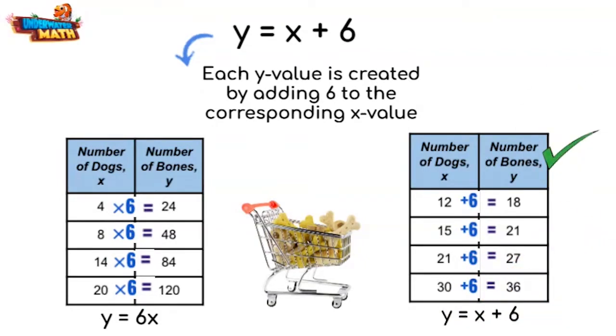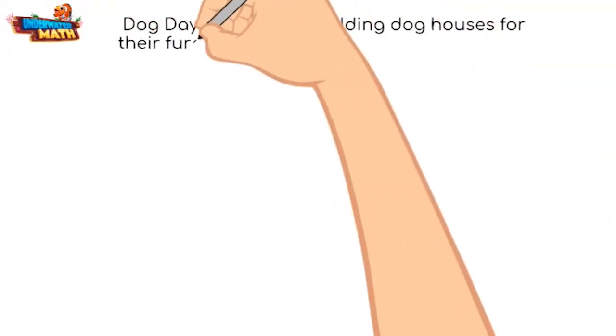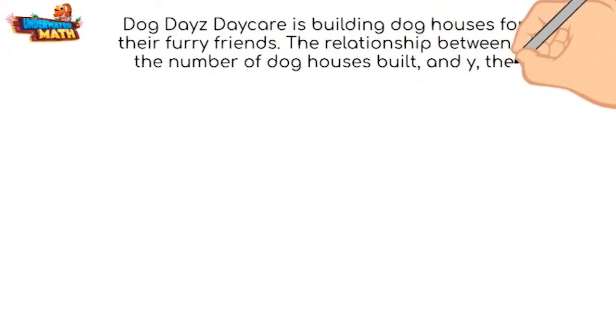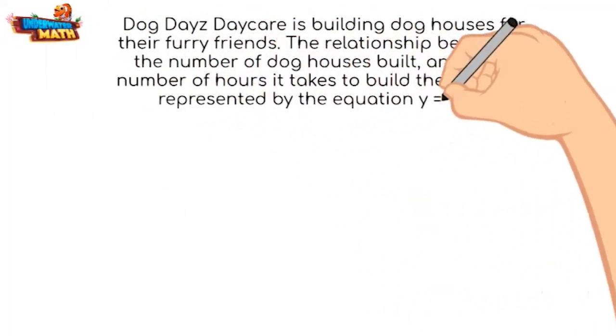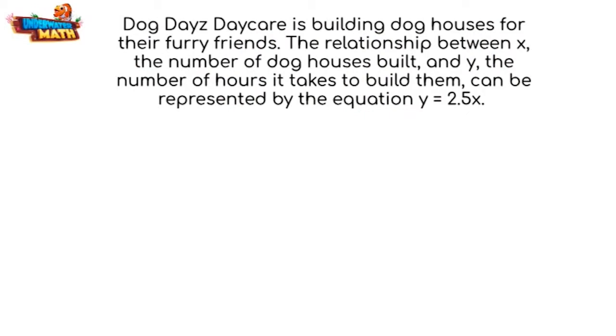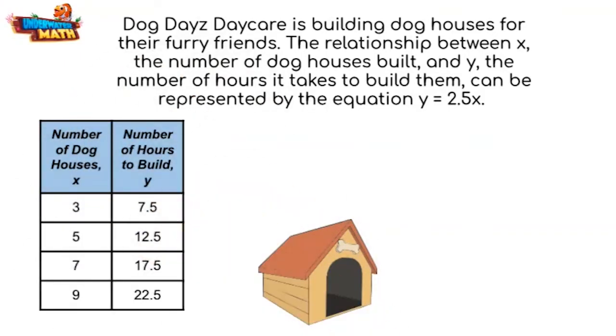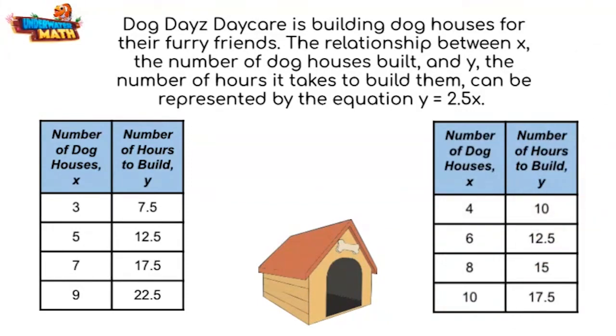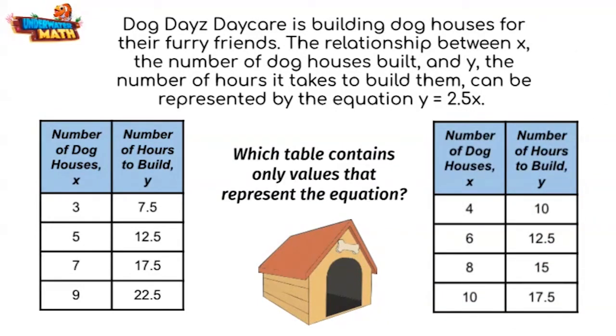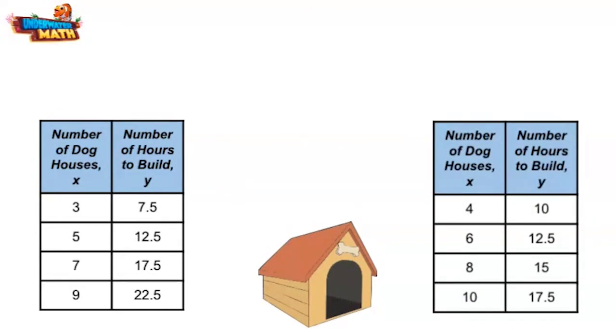Let's try another. Dog Days Daycare is building dog houses for their furry friends. The relationship between x, the number of dog houses built, and y, the number of hours it takes to build them, can be represented by the equation y = 2.5x. Which table contains only values that represent the equation?